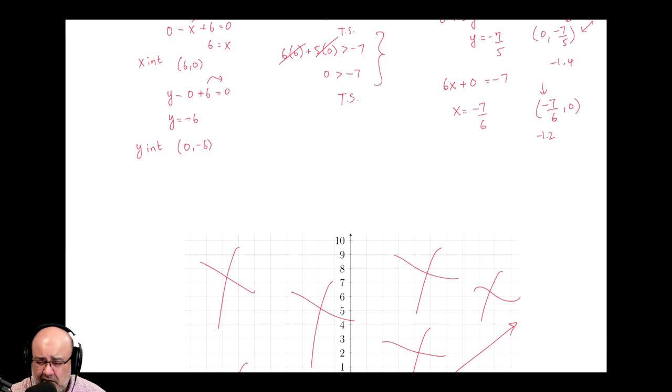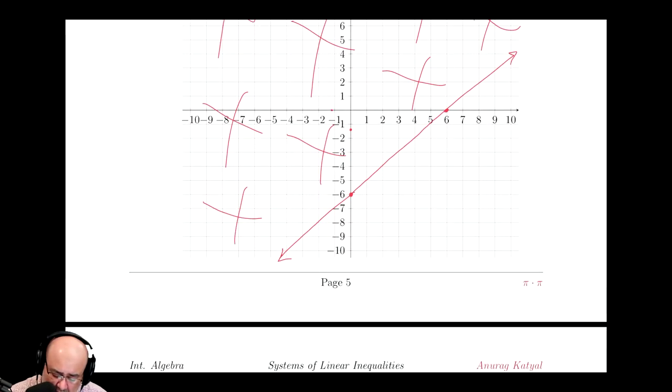I think the actual value is like negative 1.666 repeating. So if we round it off to negative 1.2, that's very close to negative 1, but to the left of it.